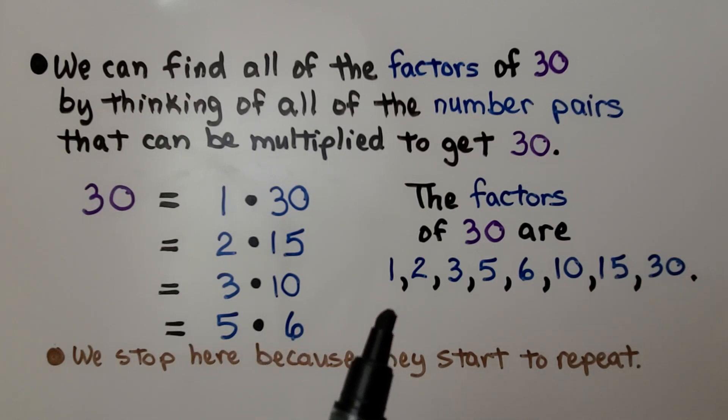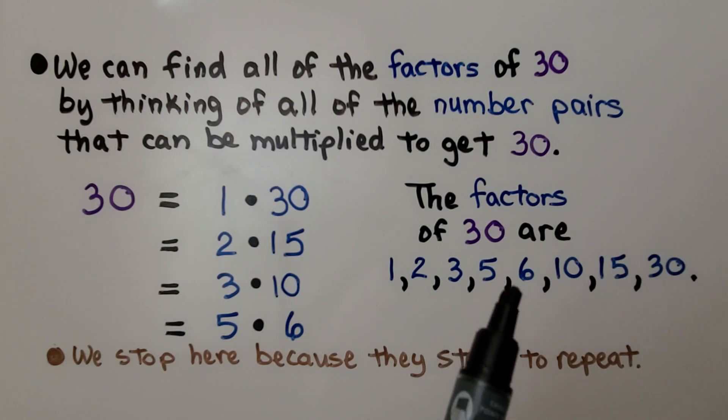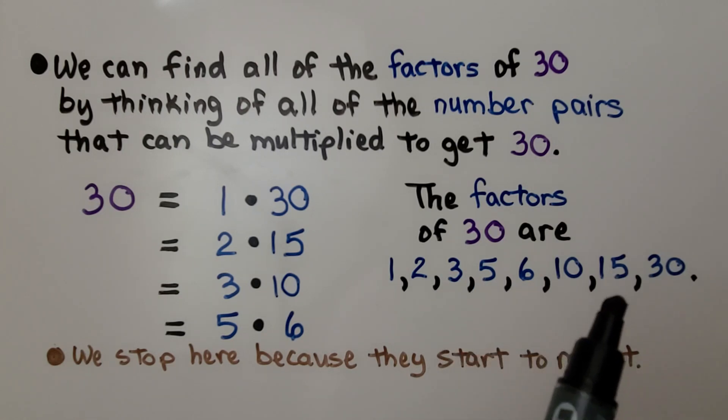So the factors of 30 are 1, 2, 3, 5, 6, 10, 15, 30.